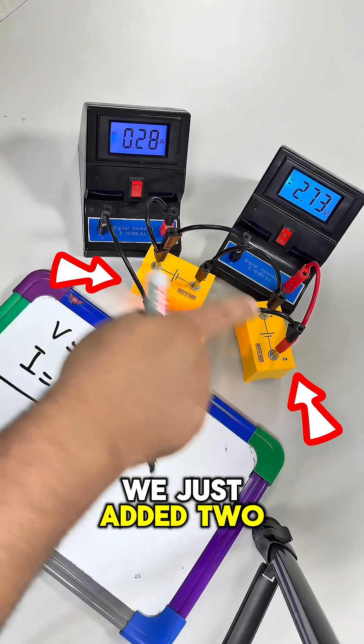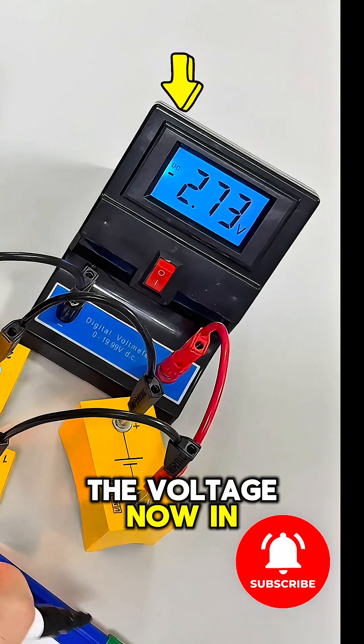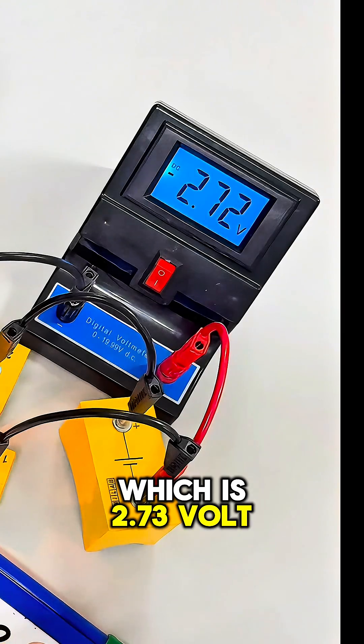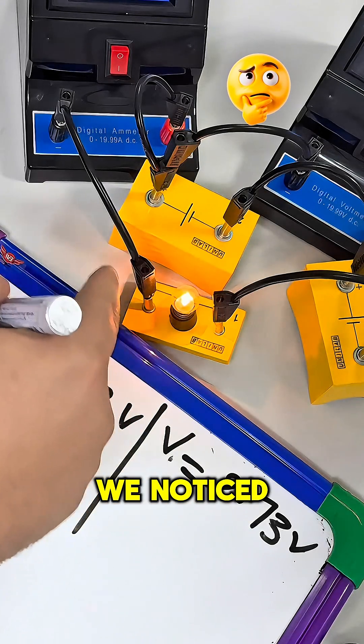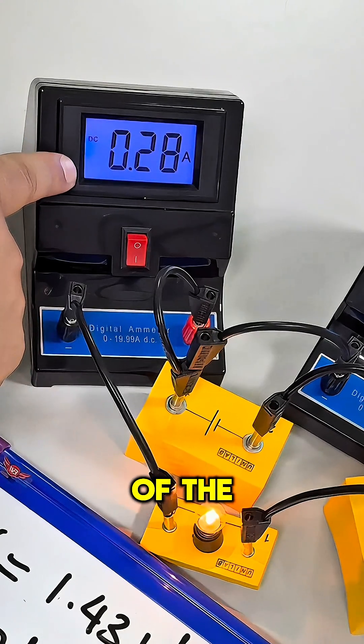In this case, we just added two dry cells or two batteries, so the reading of the voltage now is 2.73 volts. We notice that the brightness of the lamp increases and also the reading of the ammeter increases.